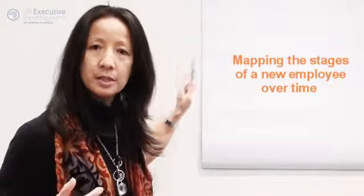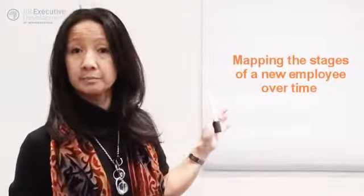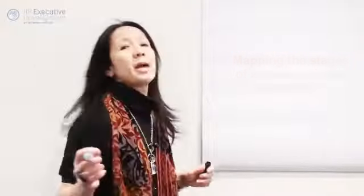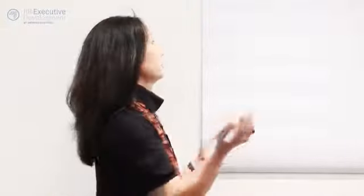So what I'm actually going to show you is a visual indicator of mapping what the stages or the experiences of an individual are over time, especially in context to a new employee. A gentleman by the name of Richard Buckminster Fuller came up with this concept and it's essentially a J curve like this.